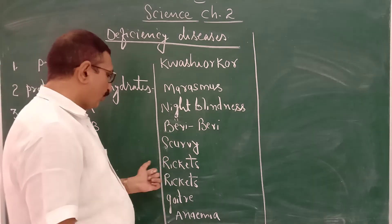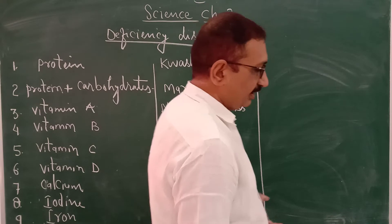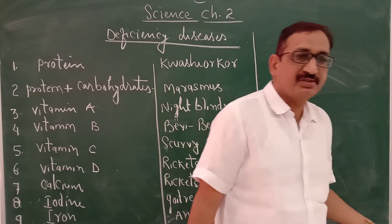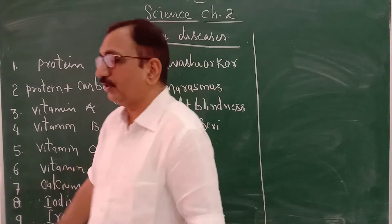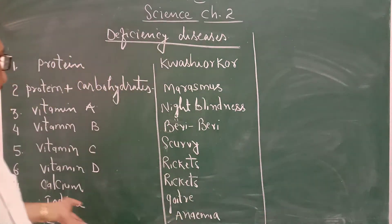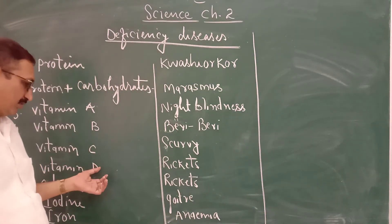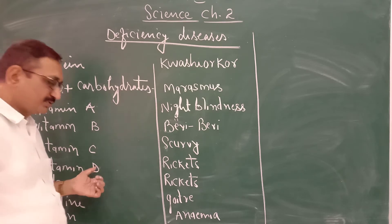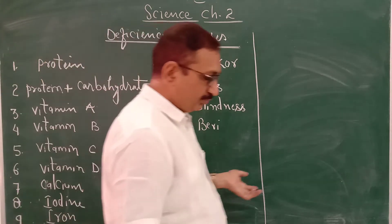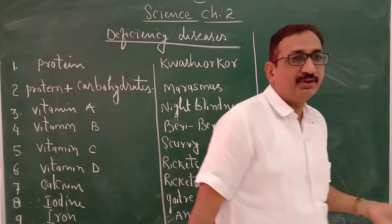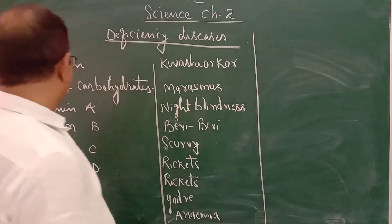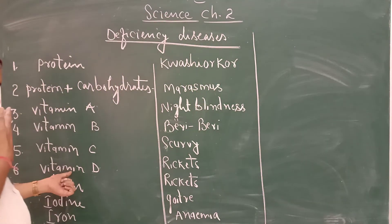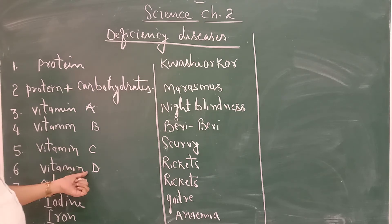The sources of Vitamin D — you can get it free of cost. You have to go out in sunlight. As long as you are out in sunlight, you will get Vitamin D. You can also get it from fish — fish liver oil. That also contains Vitamin D.